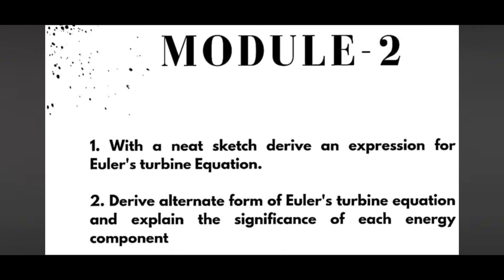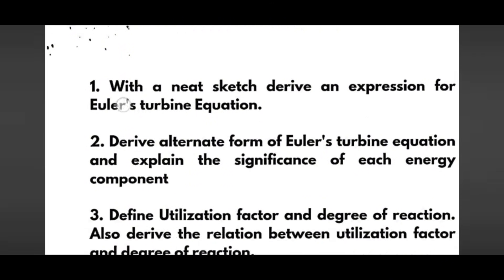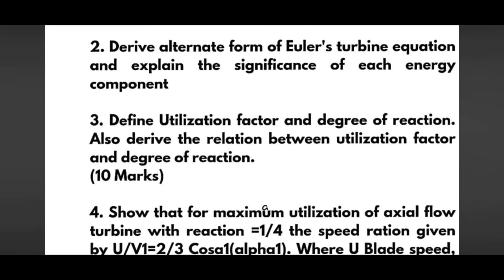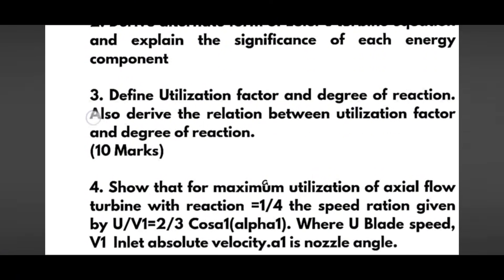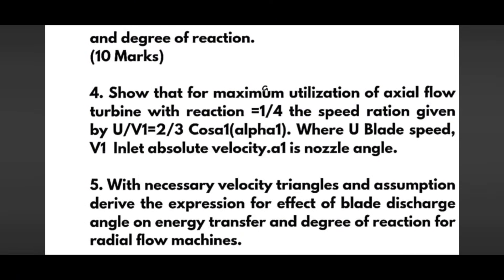Next we have Module 2, in which you have to cover some super important questions — definitely these 10-mark questions will be asked. With a neat sketch, derive an expression for Euler's turbine equation, derive the alternate form of Euler's turbine equation and explain the significance of each energy component. Next, define utilization factor and degree of reaction, and also derive the relation between utilization factor and degree of reaction — these may be 10-mark questions.